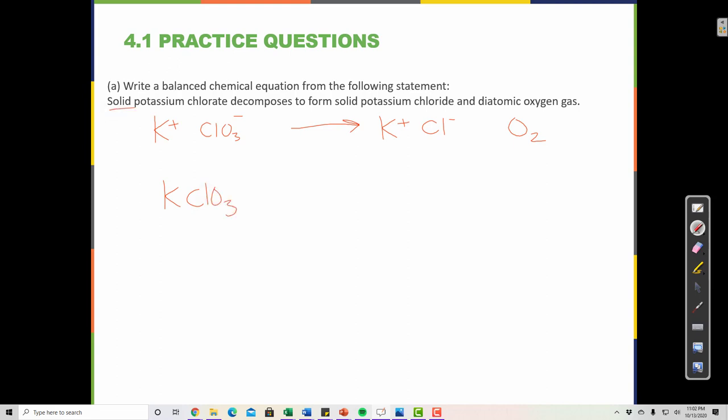It says here that it's solid. So we should write S in parentheses. And potassium chloride, and again this is solid, plus O2 gas, diatomic oxygen gas. So this is the reaction that we have so far. So this is not balanced. So now let's take inventory.